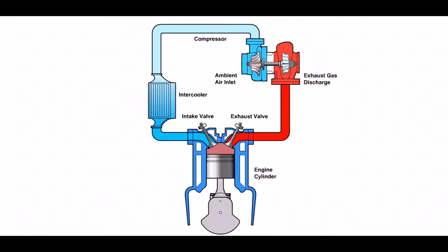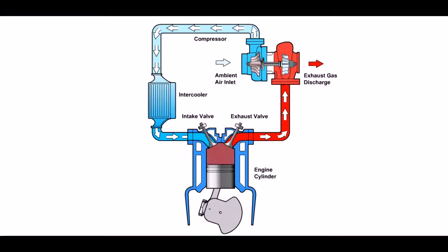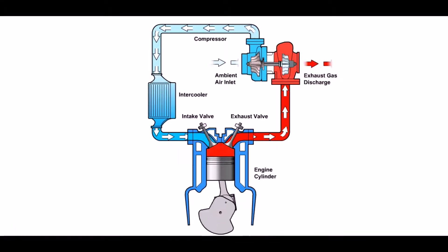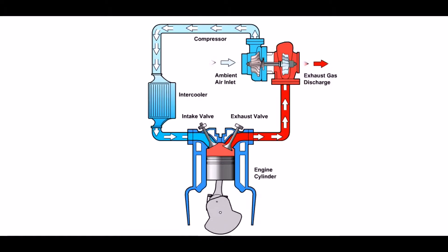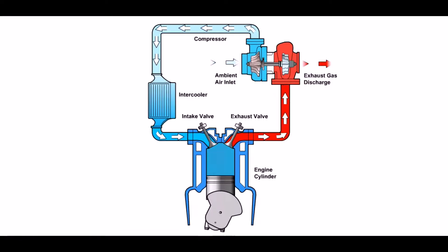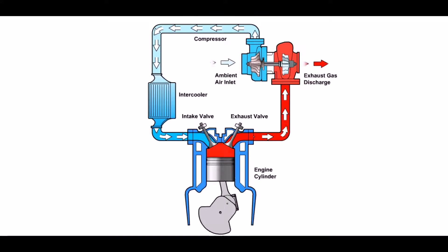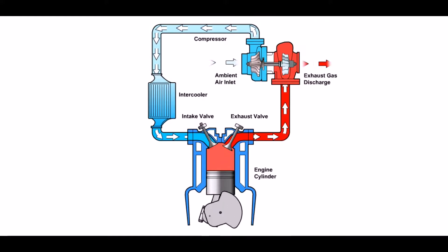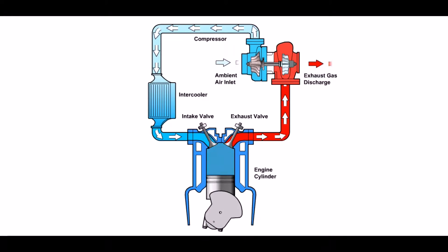Hi, today we are going to see the four strokes of the engine. A four-stroke engine is an internal combustion engine in which the piston completes four separate strokes while turning the crankshaft. A stroke refers to the full travel of the piston along the cylinder in each direction.